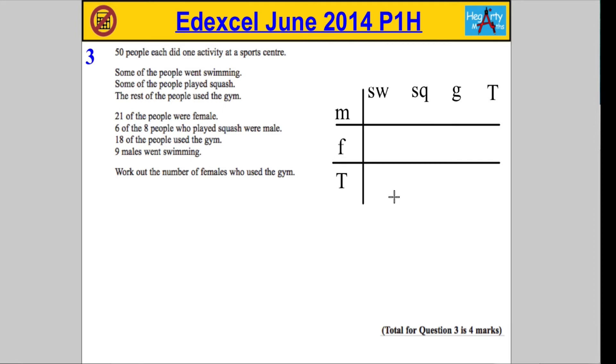Now, once we build our table, actually the answer is just going to fall right out for us. So what we've got to do is start to fill in the information, and then everything will become clear. Right. What are we told? 50 people did each... Or each did one activity. So the total number of people clearly must be 50. I'm going to tick that piece of information off. Some people went swimming. Okay. Let's go down here. We've got 21 of the people who are female, so I know that we've got 21 females in total. Tick that off.